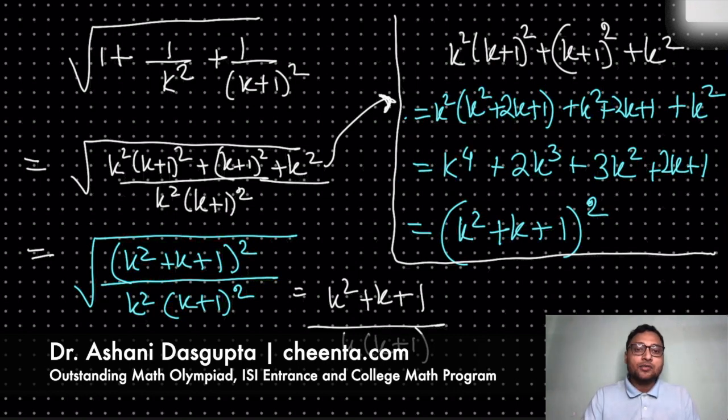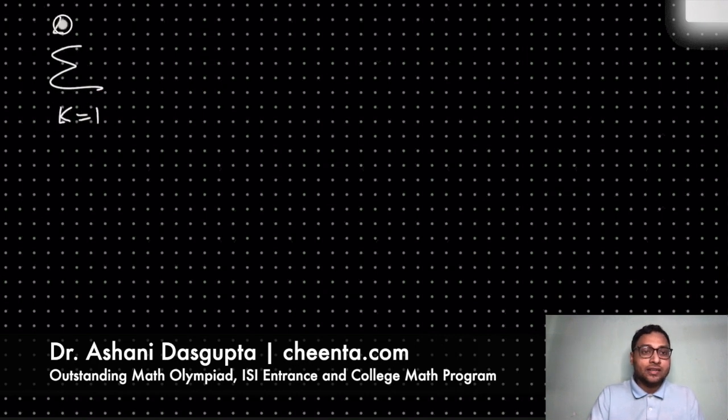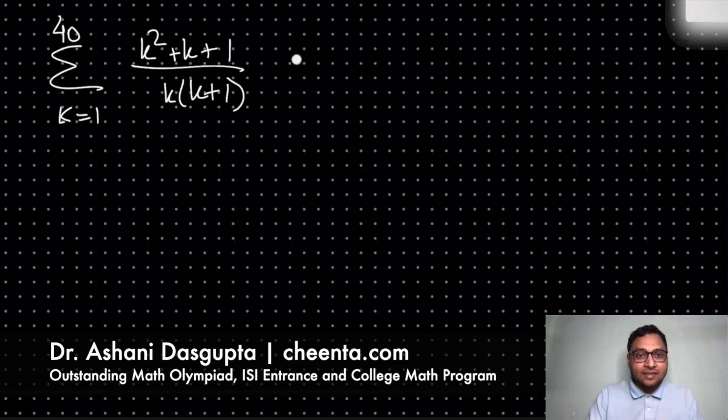So now we are doing a very different problem. We are now doing summation of k equal to 1 to 40, (k squared plus k plus 1) divided by k into (k+1). So now we can simplify this.